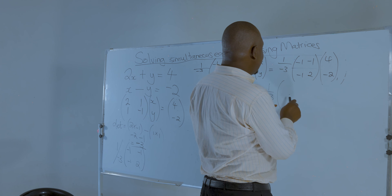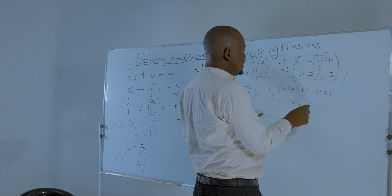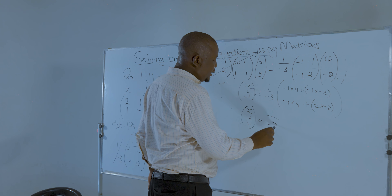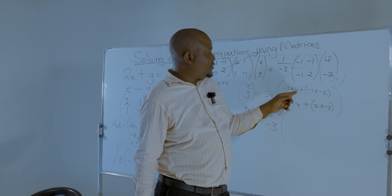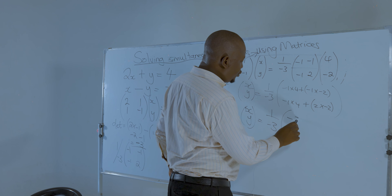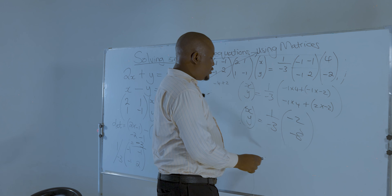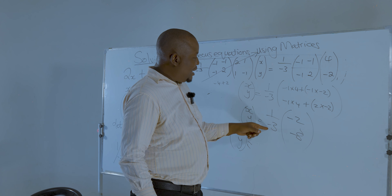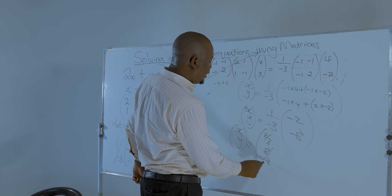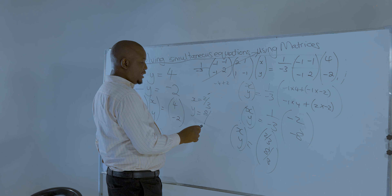By cancelling out, we are left with XY equal to the row by column multiplication. This gives us minus 1 times 4 plus minus 1 times minus 2, and minus 1 times 4 plus 2 times negative 2. So XY equals 1 over negative 3 multiplied by: minus 4 plus 2 gives minus 2, and minus 4 minus 4 gives minus 8. Therefore 1 over minus 3 times minus 2 gives x equals 2 over 3, and 1 over minus 3 times minus 8 gives y equals 8 over 3.